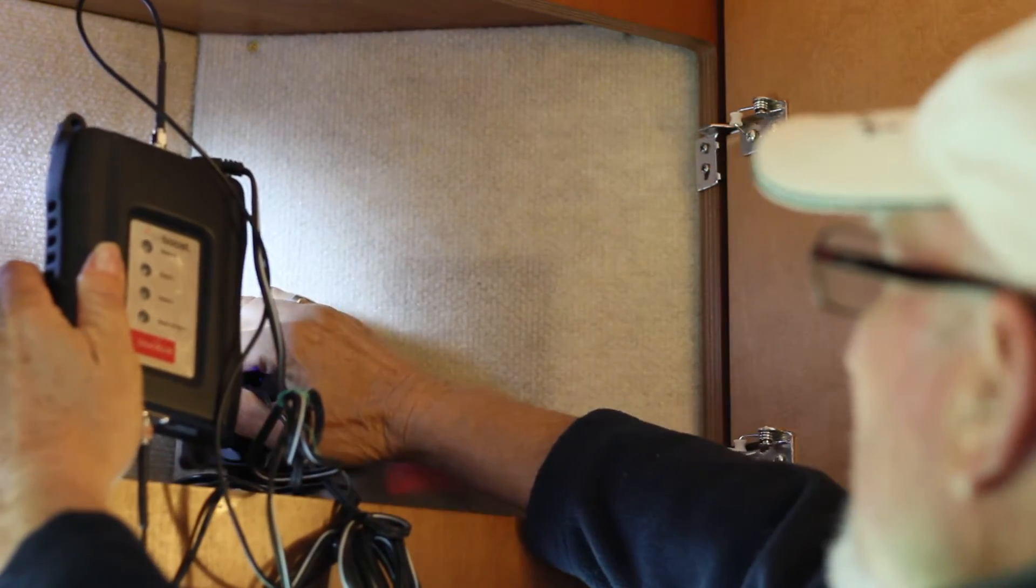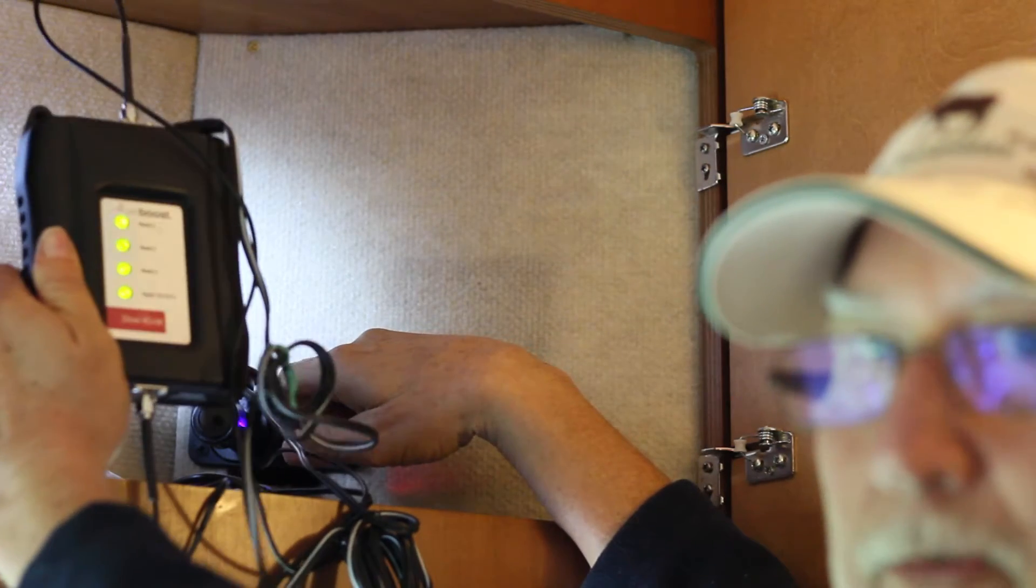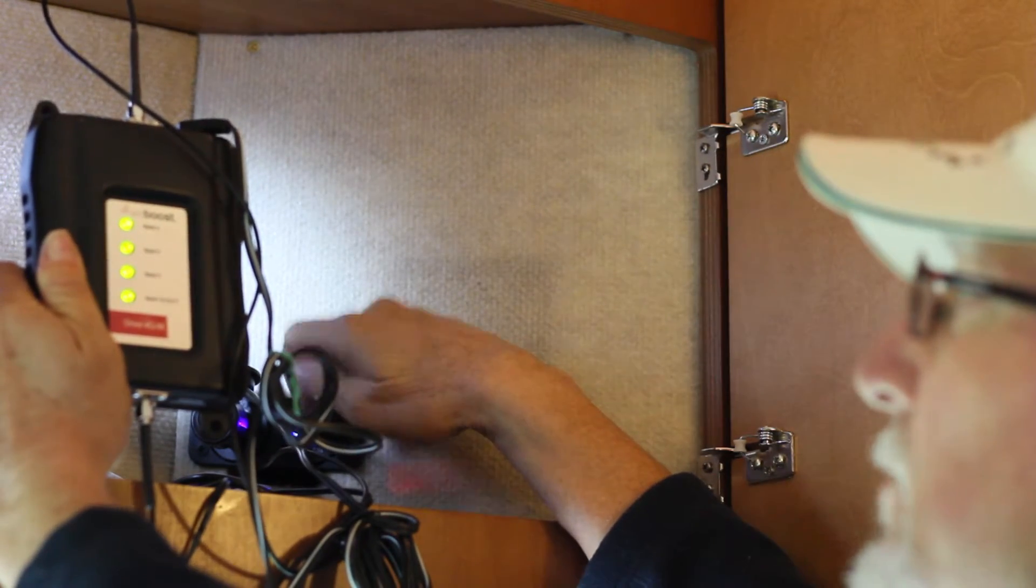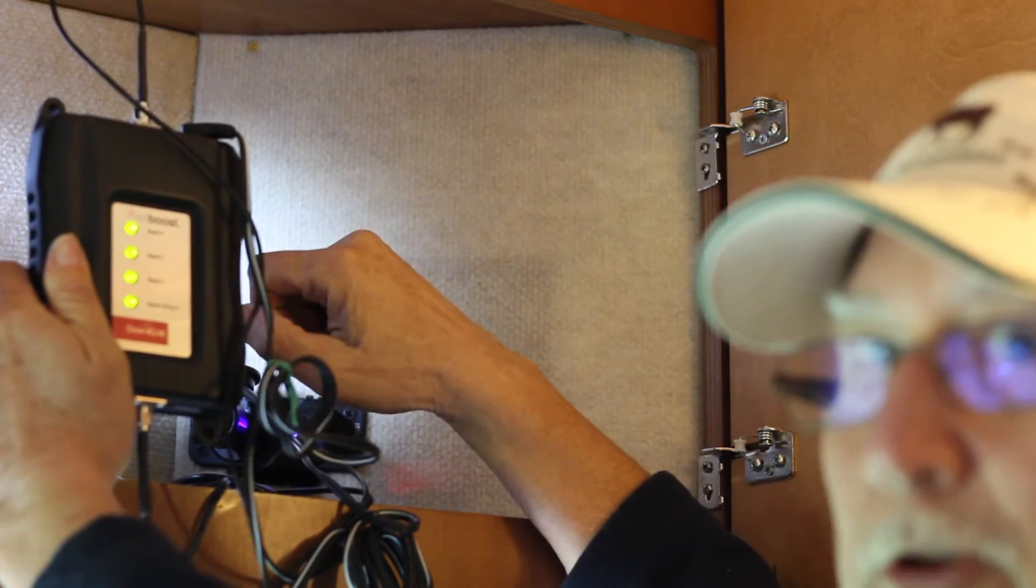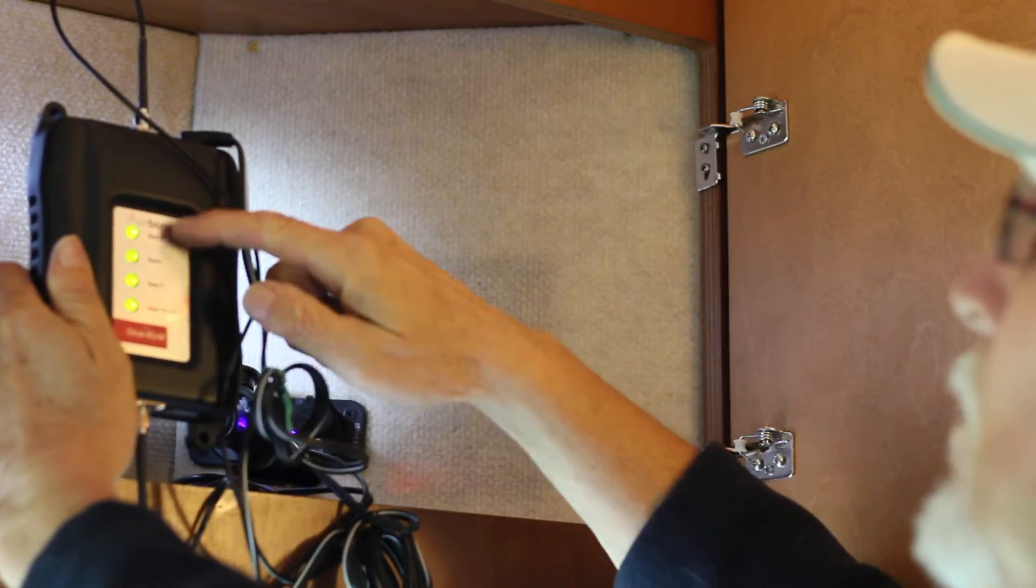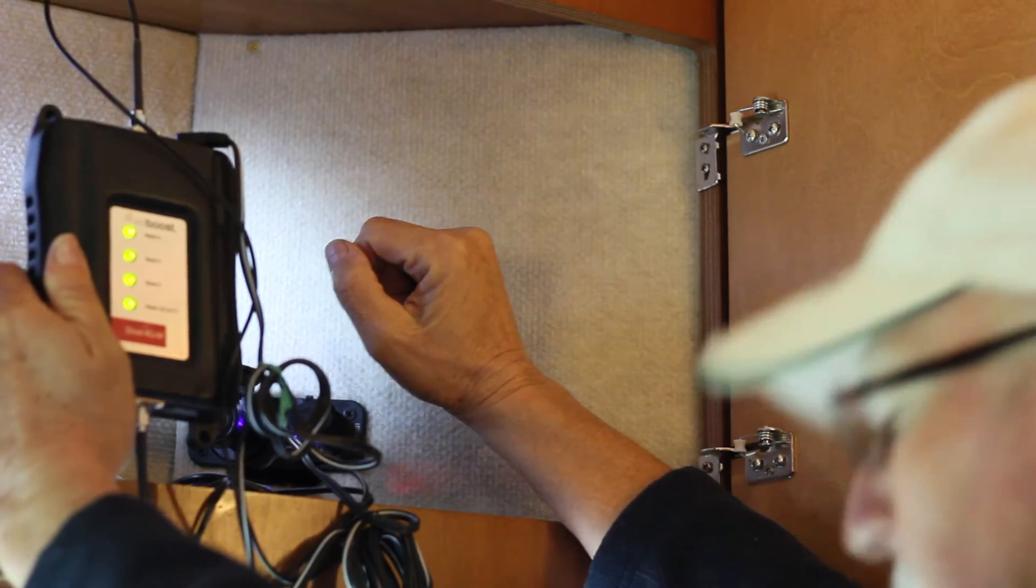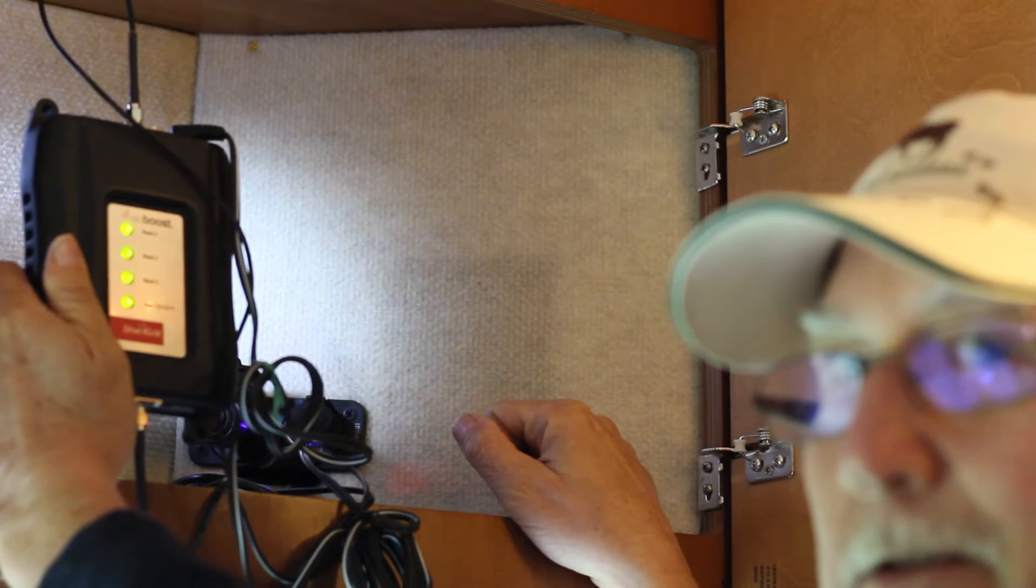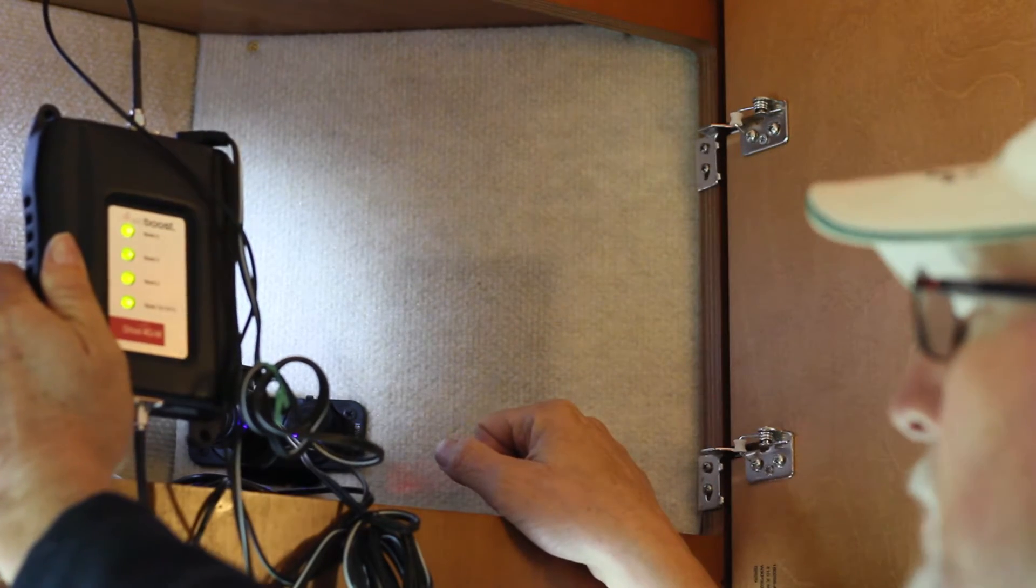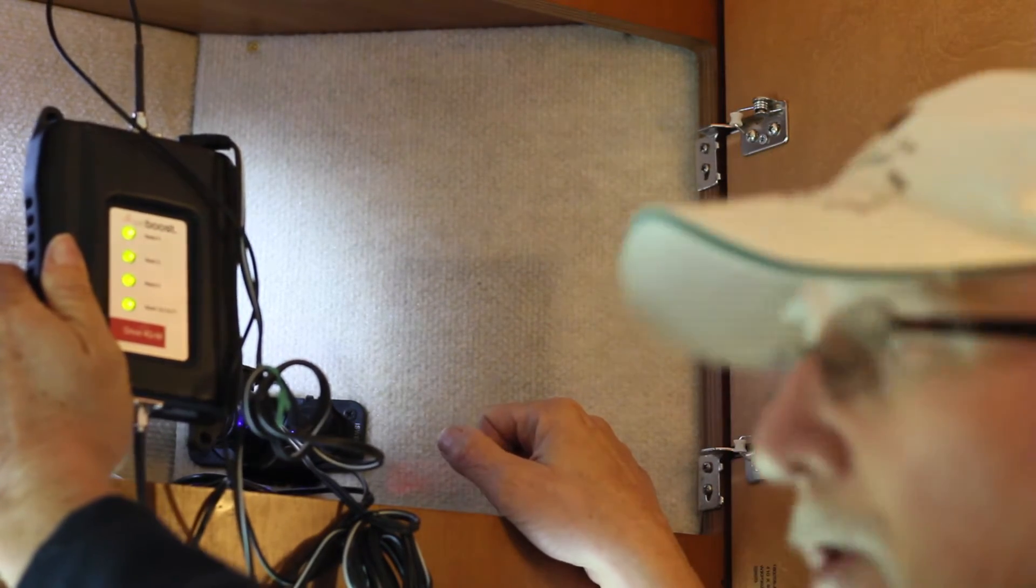And then turn it on. We have all the lights lit. We are connected to the cell phone network. We've got all the bands receiving here. All we have to do is figure out where to put the indoor antenna for the best reception for the cell phone.